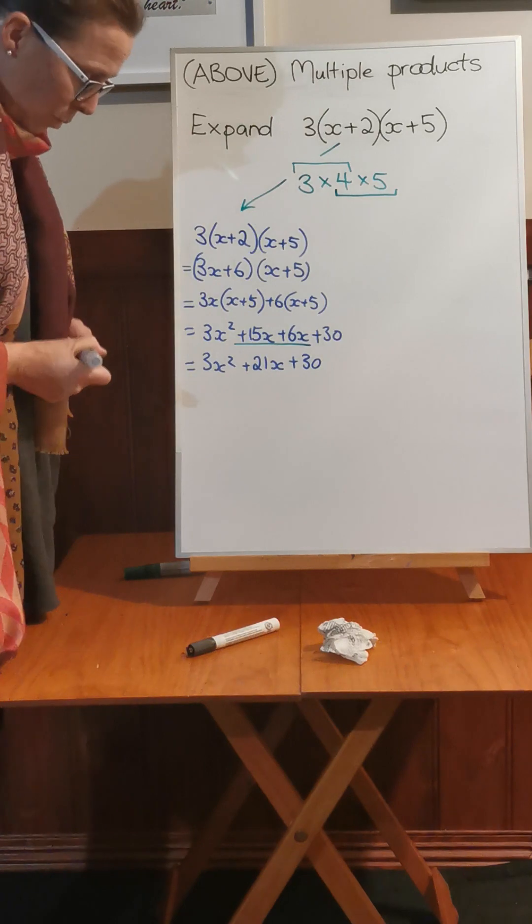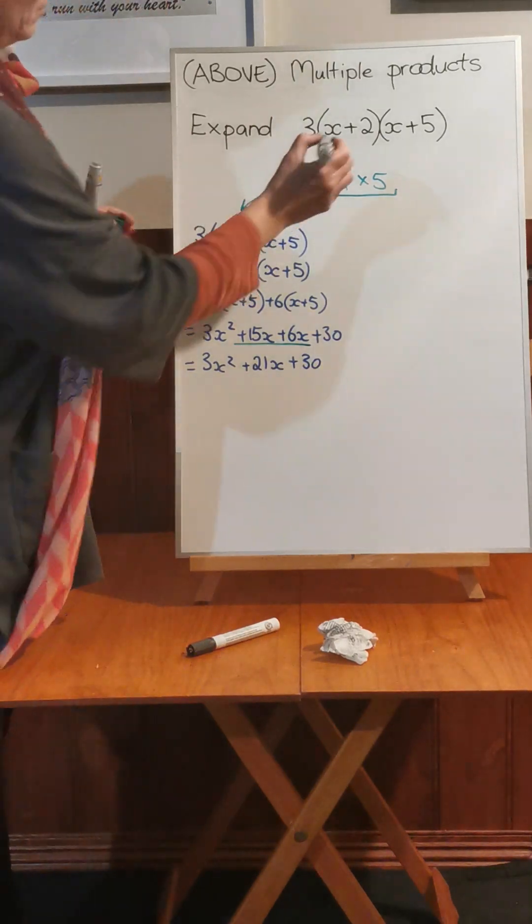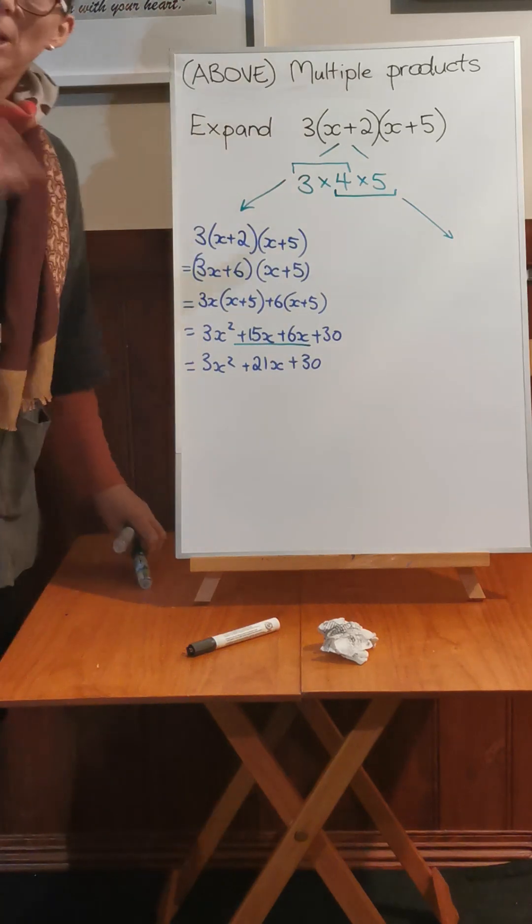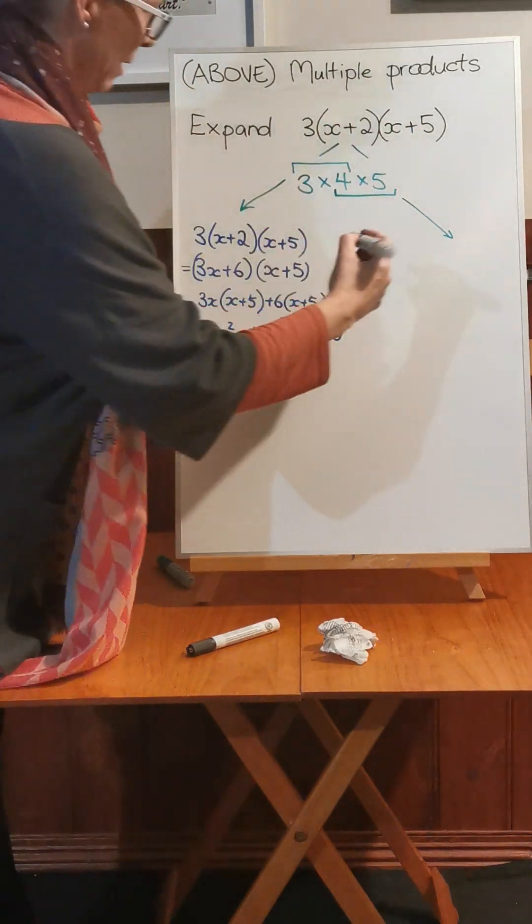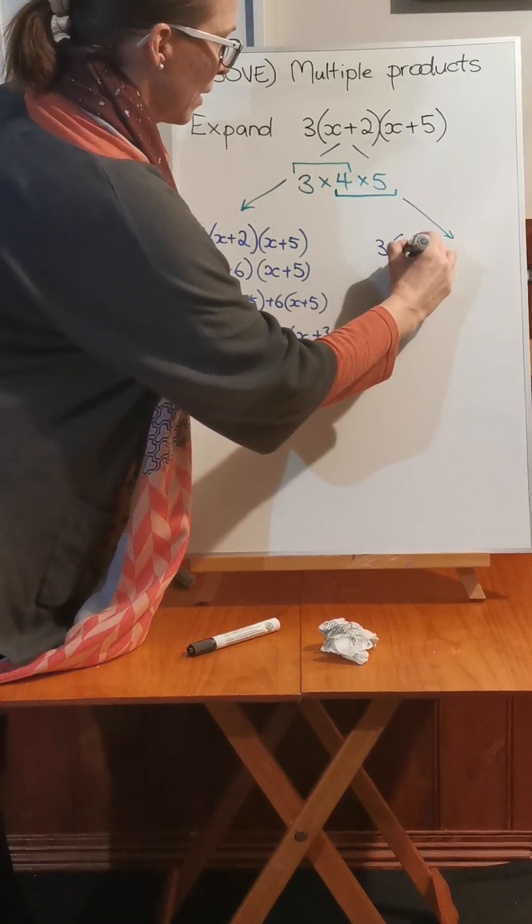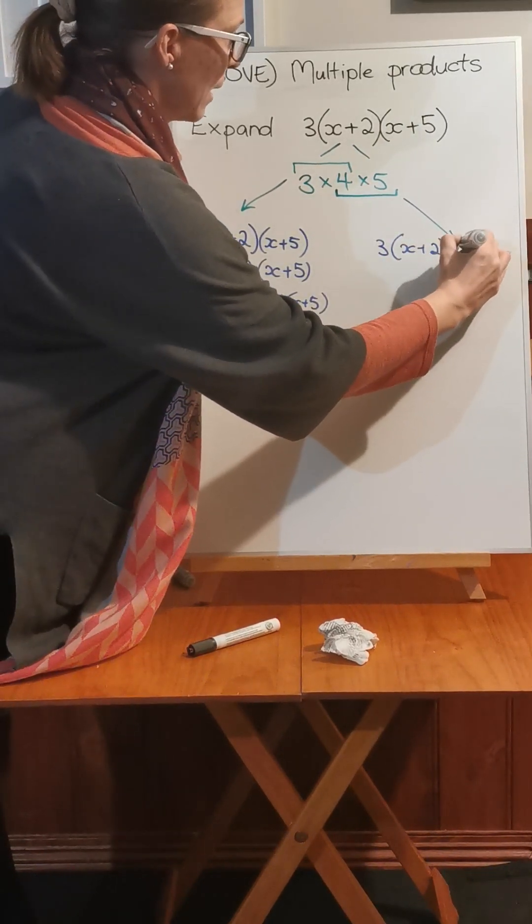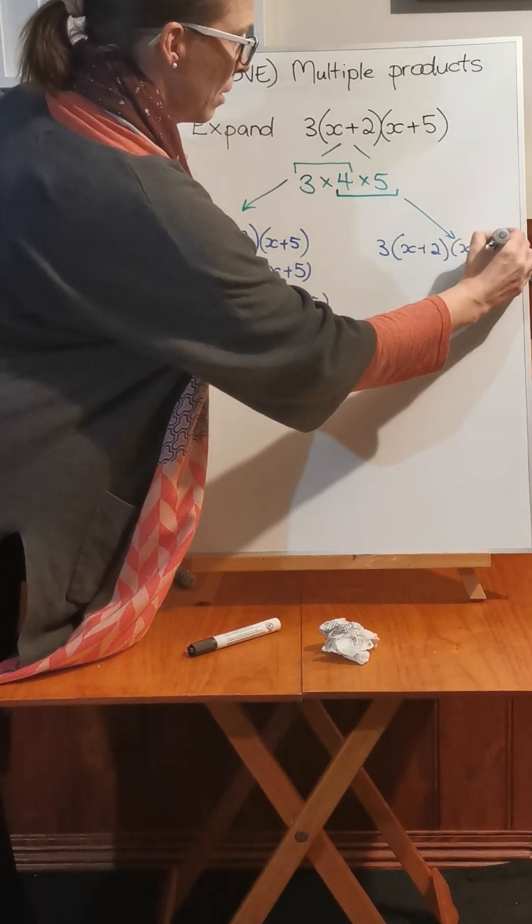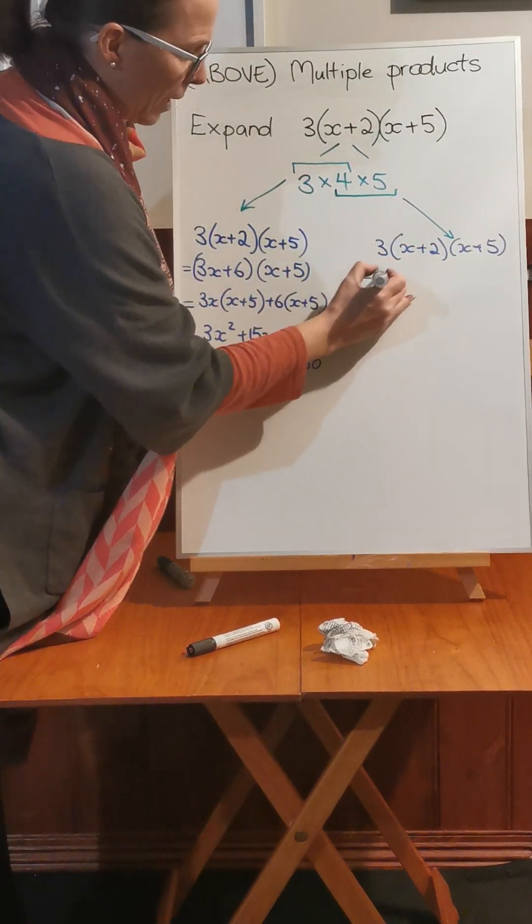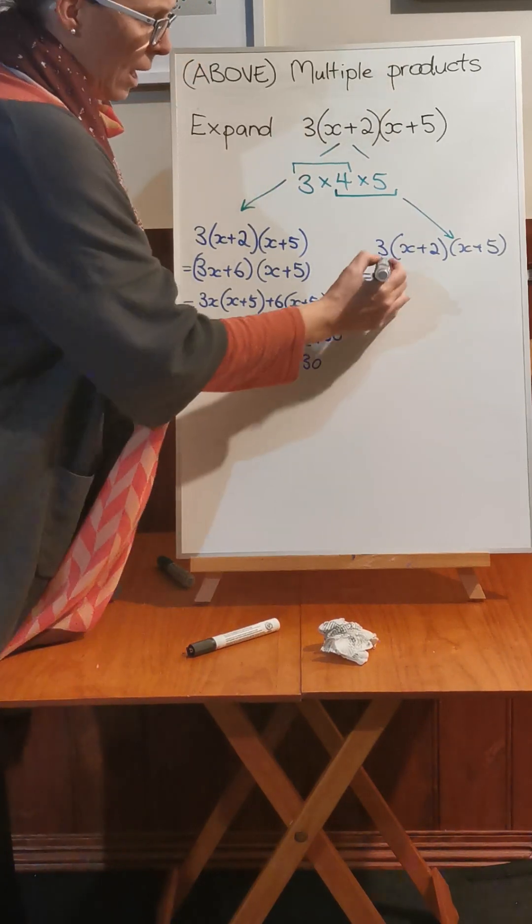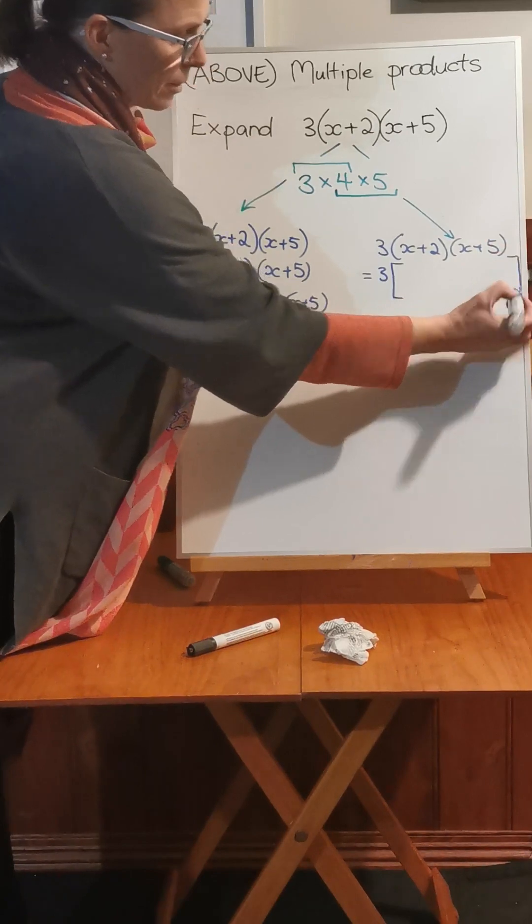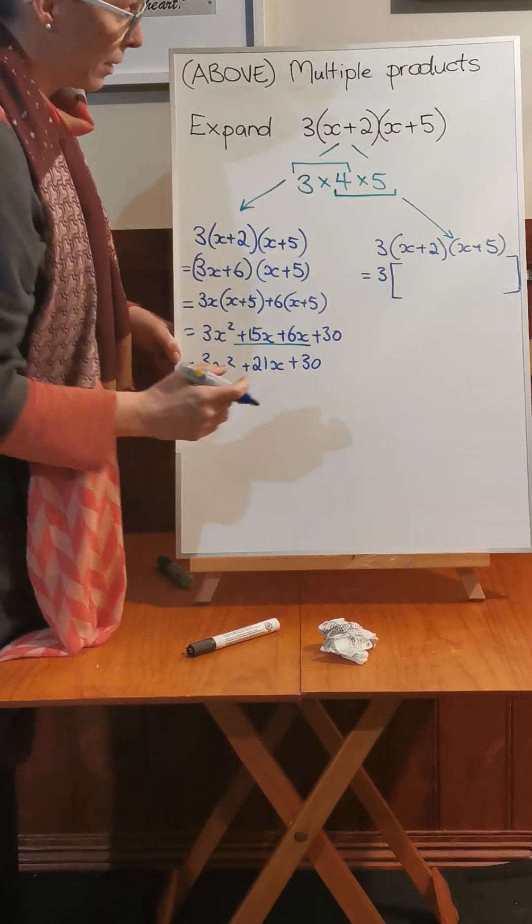The second way of doing this is multiplying the second two things before we worry about the 3 at the front. So 3 times x plus 2 times x plus 5. Just keep the 3 at the front, and I'm just going to put a big square bracket around this so that I know I'm just focused on this section.